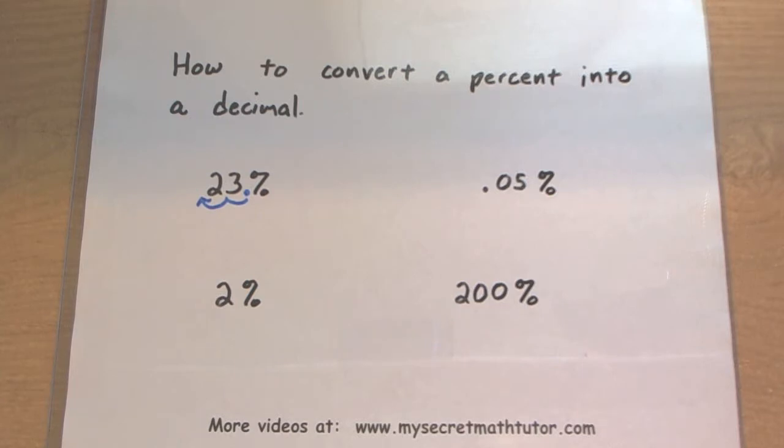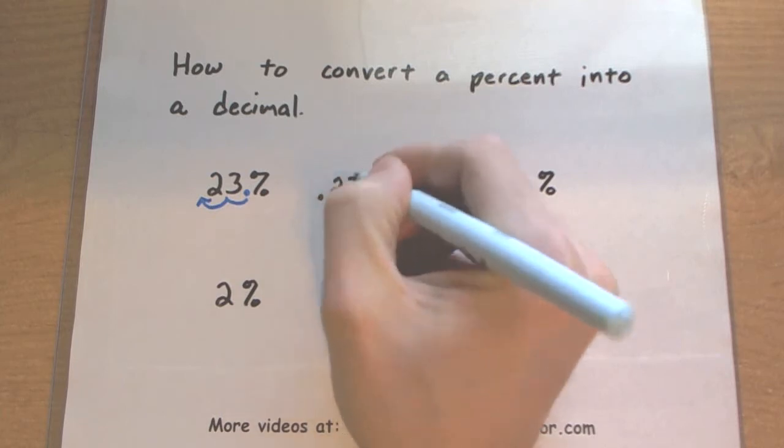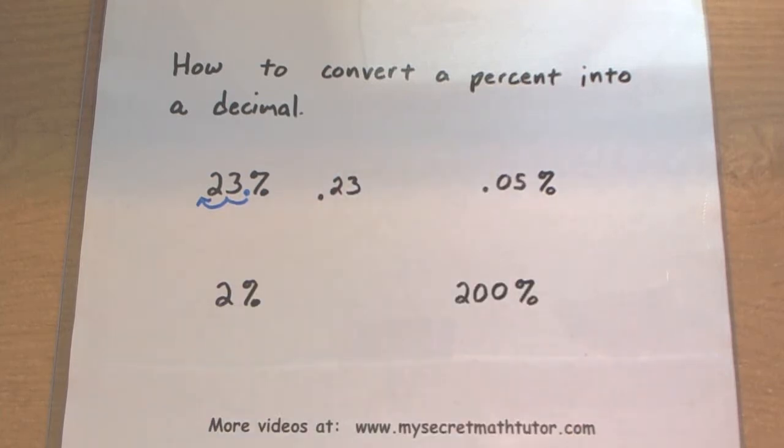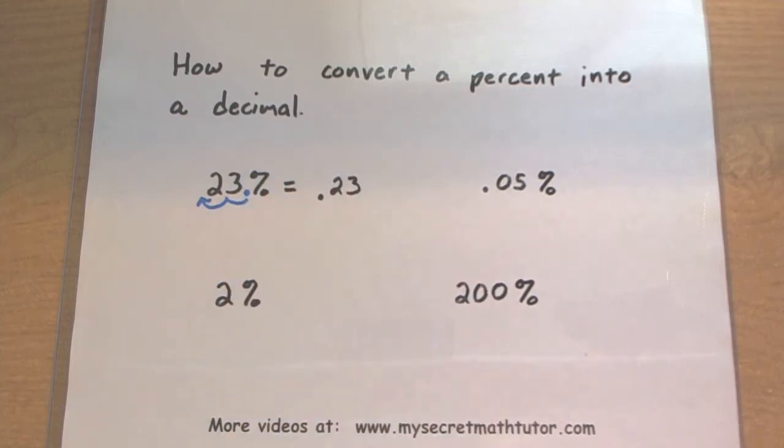Now, wherever this decimal ends up, we're going to put that in our new number, so 0.23, and then we're no longer going to write the percent sign, since it is now a decimal. Okay, so 23% is equal to 0.23.